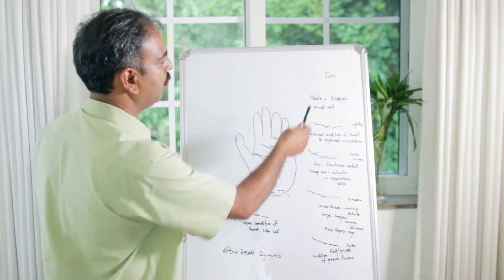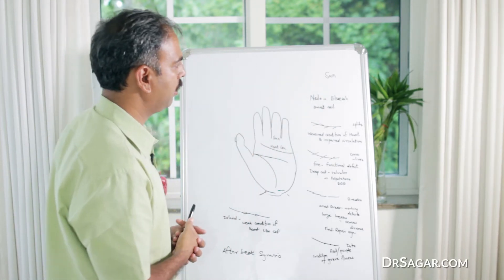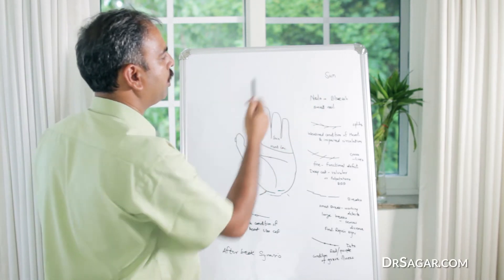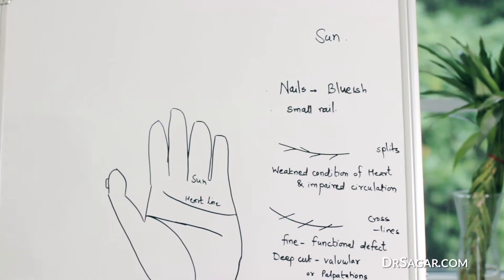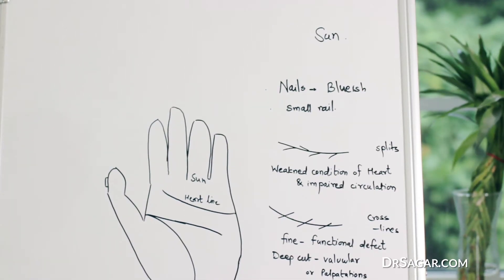First, the mount of the sun. If the mount of the sun is well developed in hand, or it has some negative signs, the person is prone to heart disease.